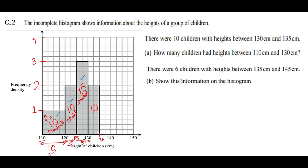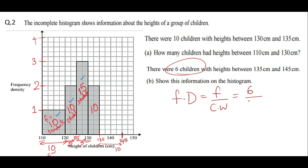Moving to the second part of the question: there were 6 children with heights between 135 cm and 145 cm. Show this on the histogram. The class width is 145 minus 135, giving 10. The frequency density is 6 divided by 10, which is 0.6. Marking 0.2, 0.4, 0.6 on the scale, draw a straight line from 135 to 145 at height 0.6 to complete the bar.